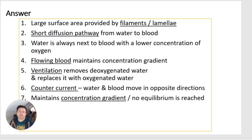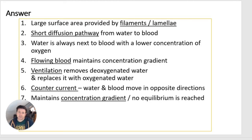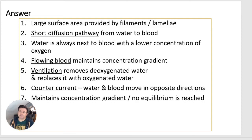The key points for the answer are: large surface area provided by gill filaments or lamellae; short diffusion pathway from water to blood; flowing blood maintains a steep concentration gradient; ventilation removes deoxygenated water and replaces it with oxygenated water; and counter current flow — water and blood move in opposite directions — maintains the concentration gradient so no equilibrium is reached.